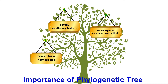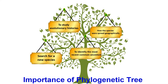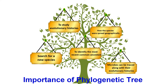By analyzing the phylogenetic tree, you may search for new species — you can get an idea about how new species can be evolved. You can also identify the most recent common ancestor by studying the phylogenetic tree. Additionally, you can trace different microbes back to their evolutionary history. If you find a microbe, you can simply create its phylogenetic tree and deduce the evolutionary history of that particular microbe.